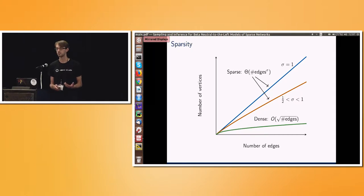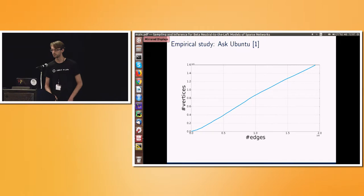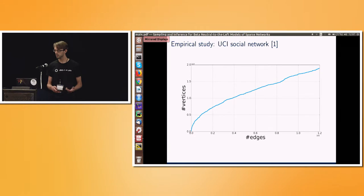Why? Because we actually observe this in real data. So here's some data from Ask Ubuntu. The vertices are users, the edges are questions and answers. And we can see something that looks fairly convincingly like linear sparsity. The rate of people joining the network is pretty much constant. By contrast, here's a UCI social network. And we can see, you know, for sure some sublinearity, people joining more slowly as the network grows.